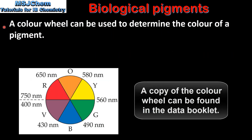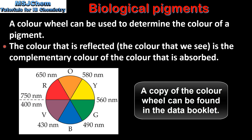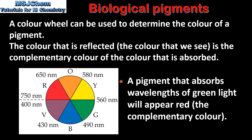A colour wheel can be used to determine the colour of a pigment. The colour that is reflected — which is the colour that we see — is the complementary colour of the colour that is absorbed. So for example, a pigment that absorbs wavelengths of green light will appear red. By looking at the colour wheel, a pigment that absorbs green light will reflect the complementary colour, which is red.